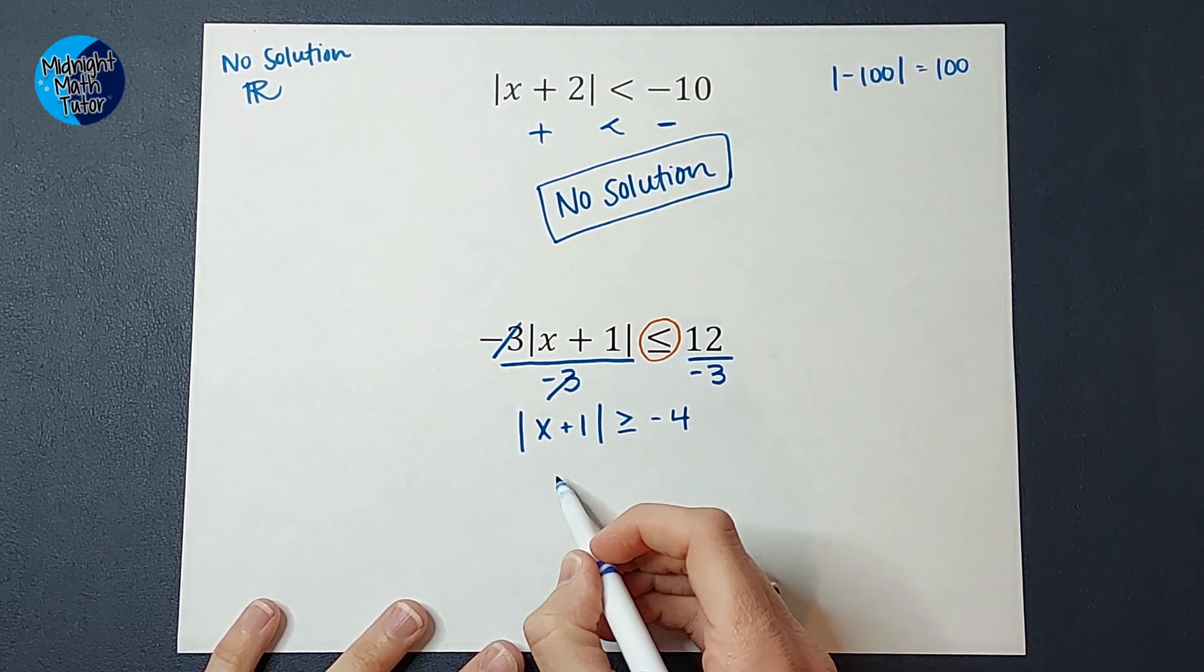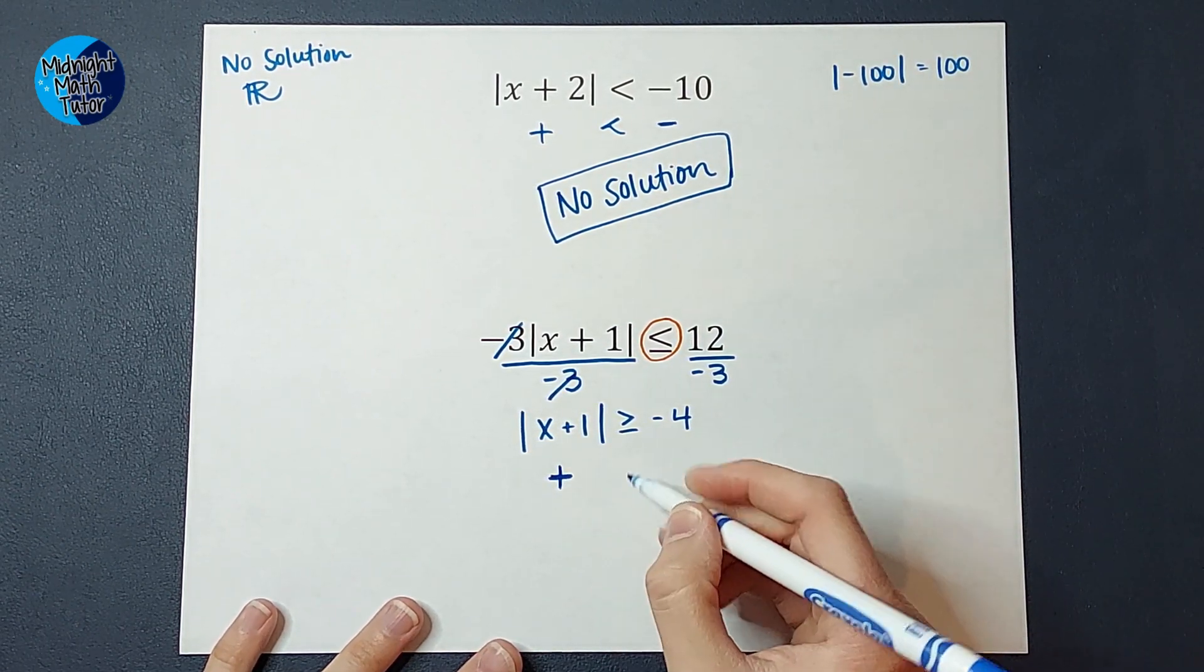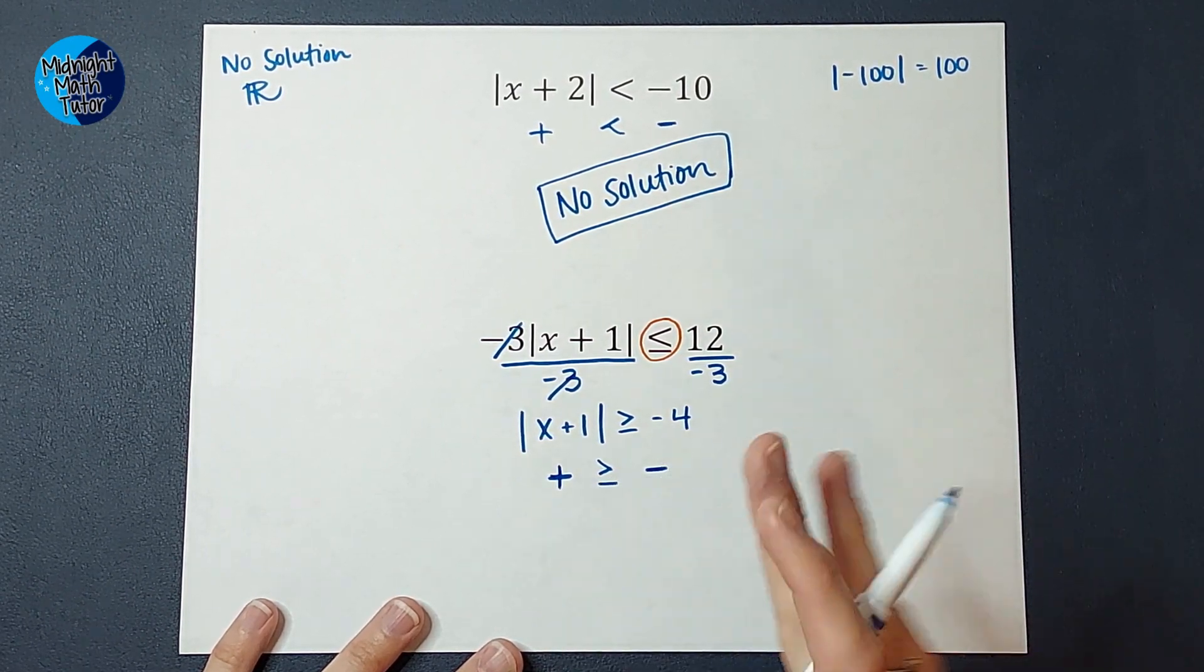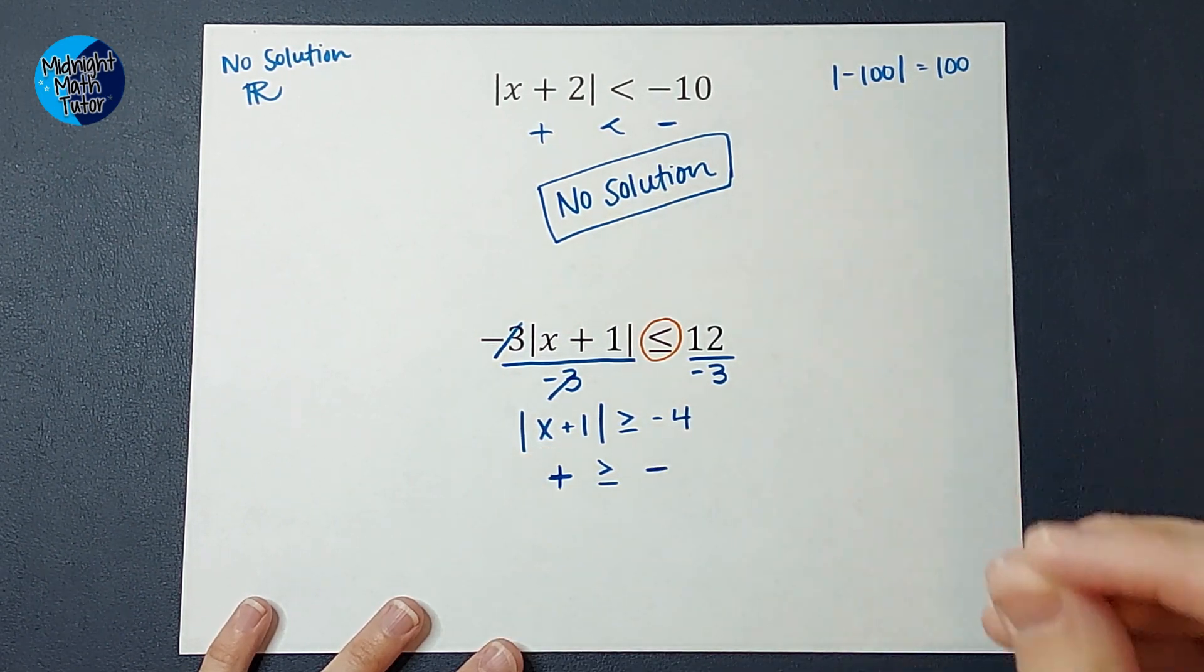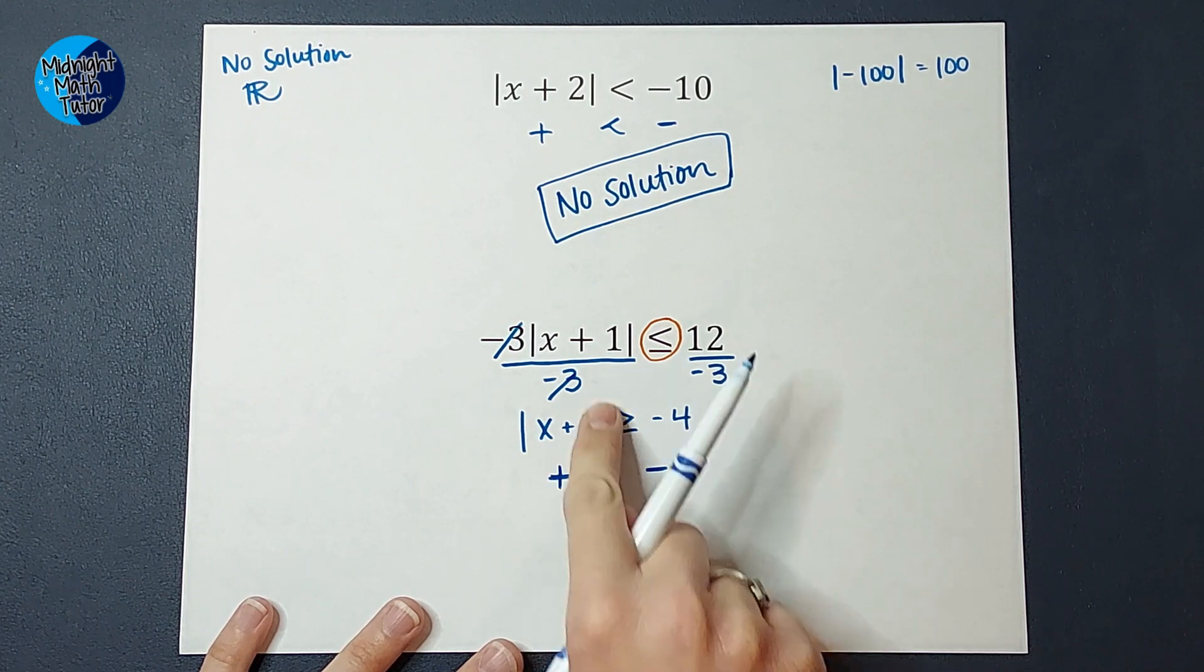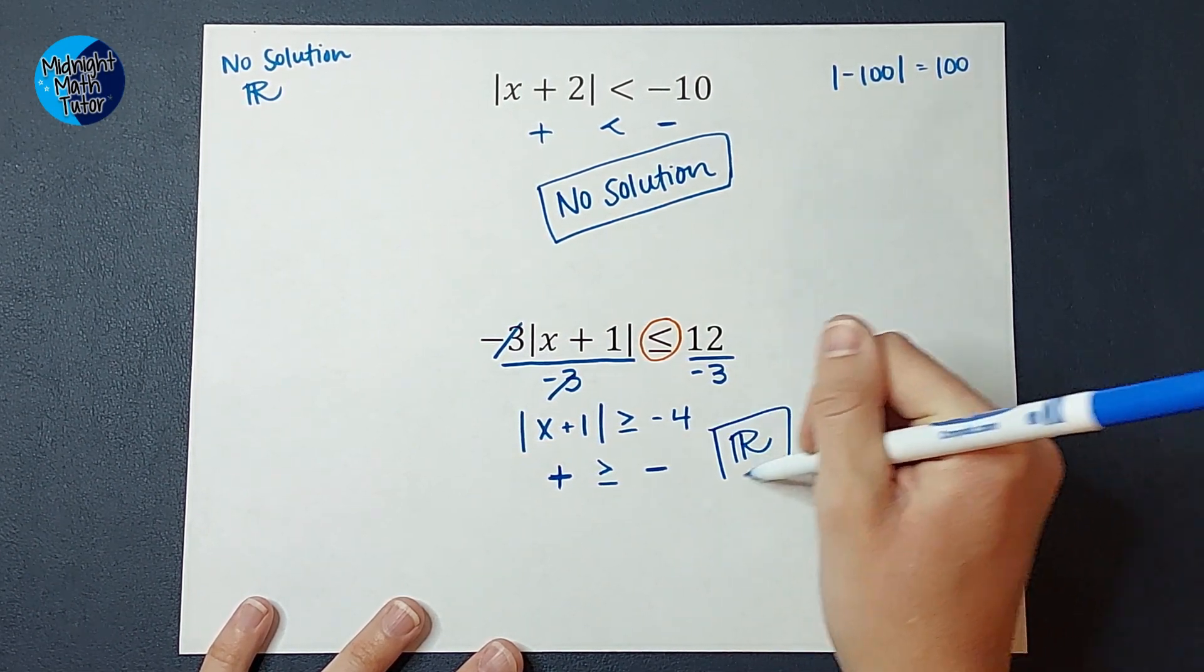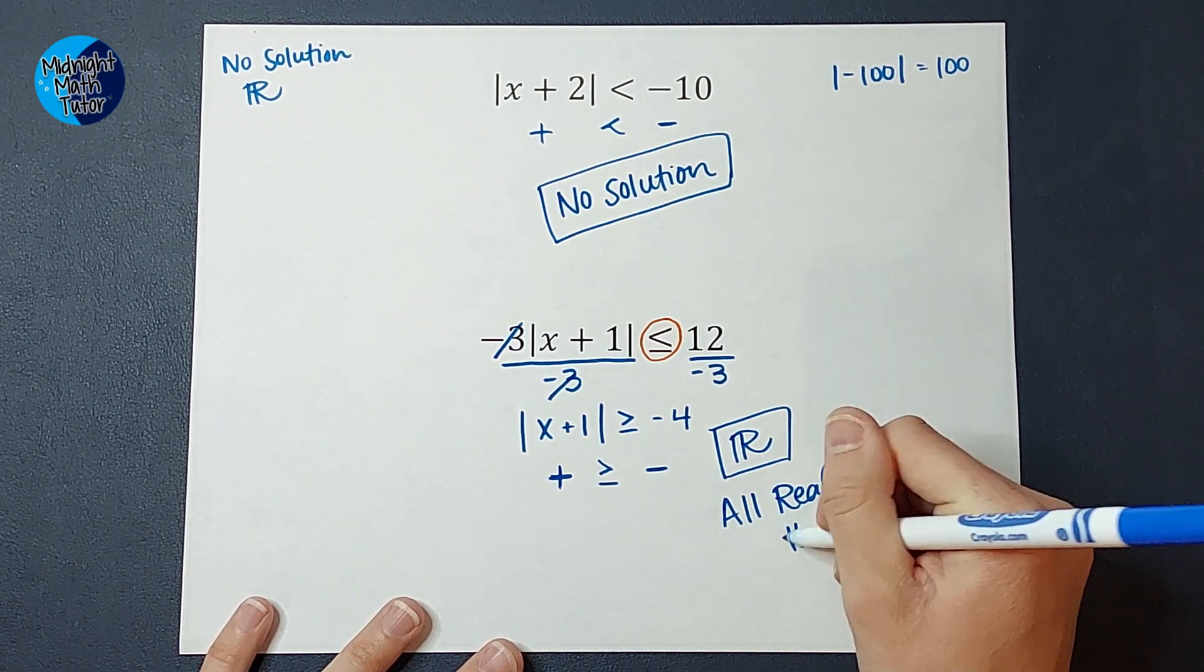Any number I plug in here will end up with a positive answer because it's absolute value. Is a positive number ever - well, let's do this. Is this always going to be true? Is a positive always going to be greater than or equal to a negative? It's not going to be equal to, but we don't really need to worry about that. It's always going to be greater than a negative. So I could plug in any number for x. I could plug in negative 5,000, and the absolute value of whatever that is will end up being positive. So a positive is always going to be bigger than a negative. So I can plug in any number and this inequality will be true. So the solution for that one is all real numbers.